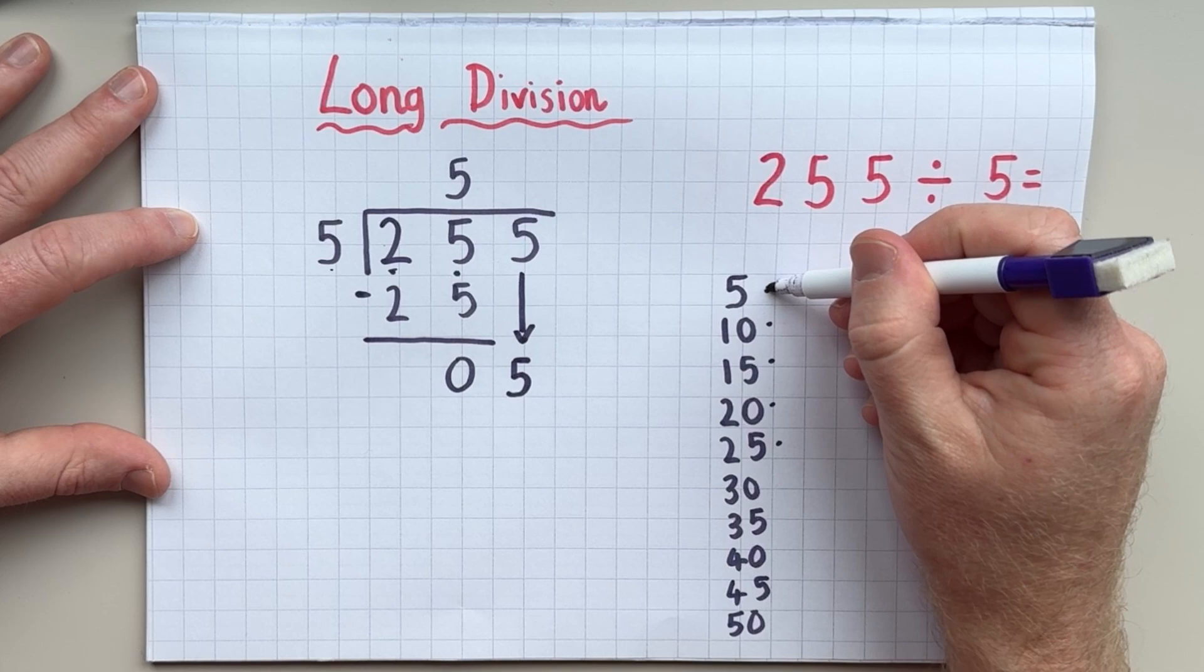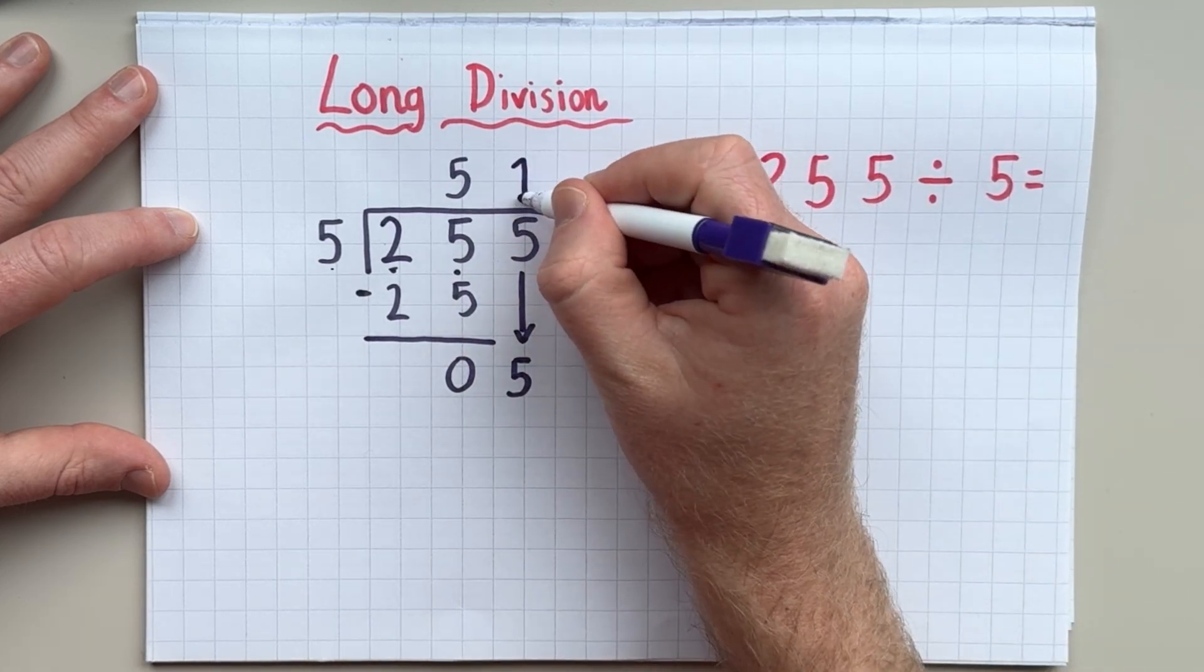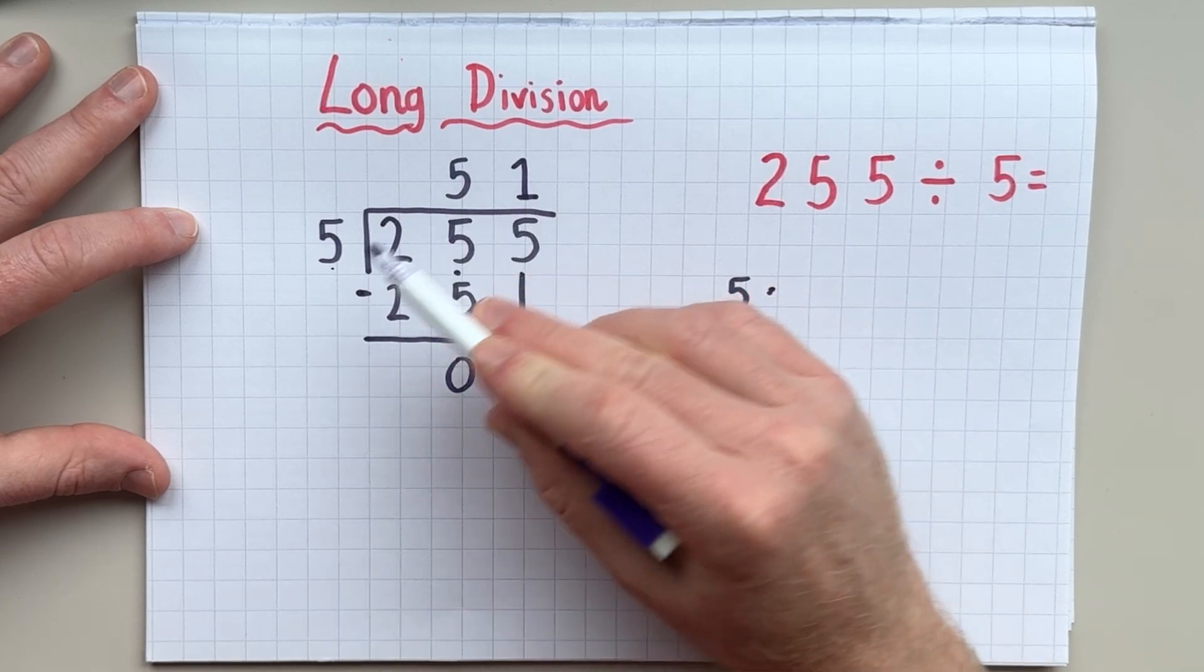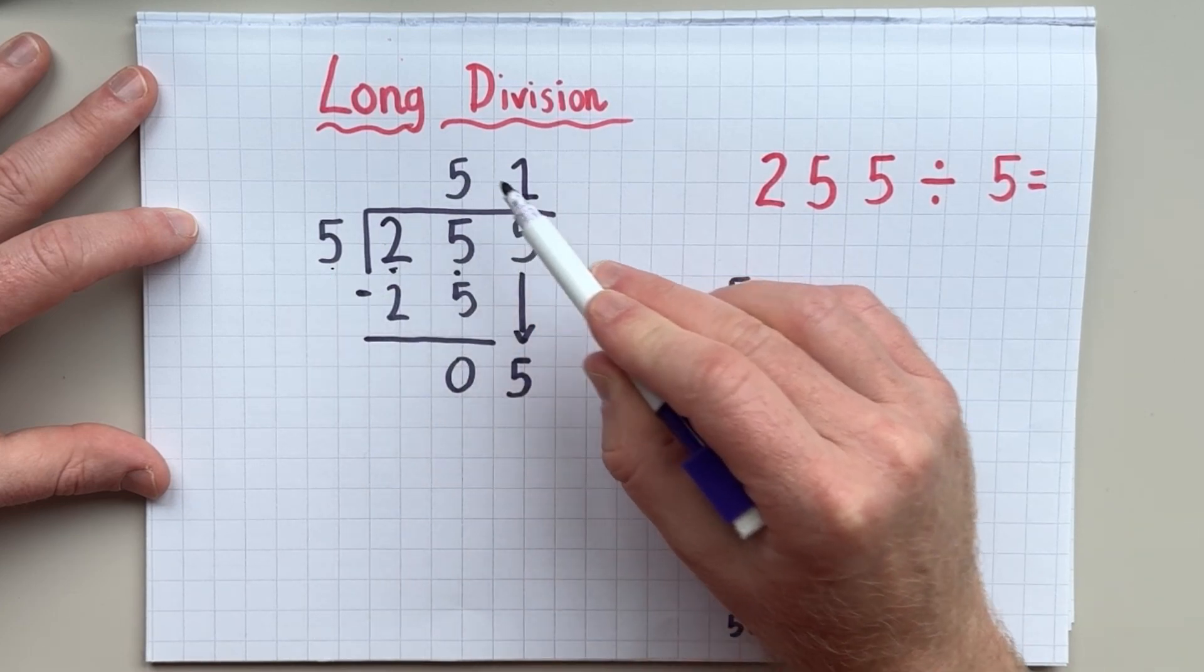And I'm going to say how many fives are in five. And there is one. And now there are no more numbers left. So 255 divided by five is 51.